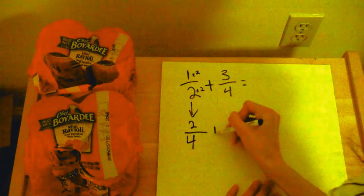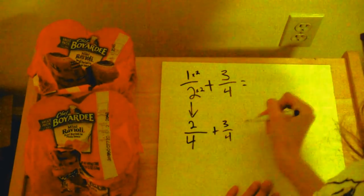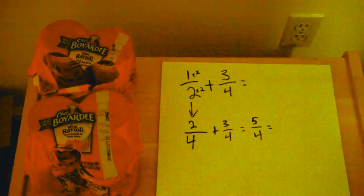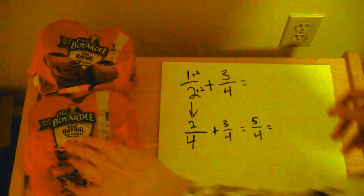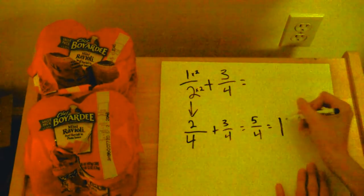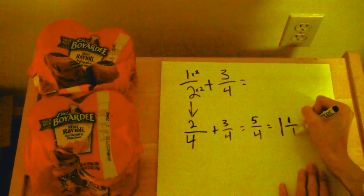All right, so two-fourths plus three-fourths is equal to five-fourths. How many full packs do I have regularly? Well, four could go into five one time. And then what do we have left? We only have one of those fourths left.